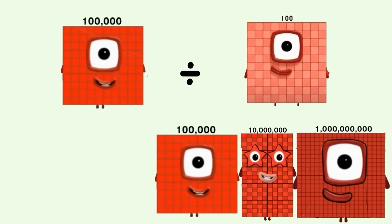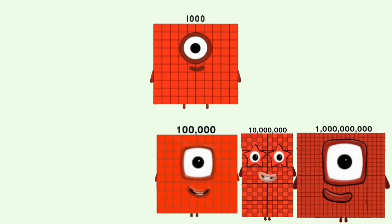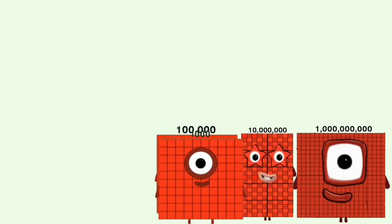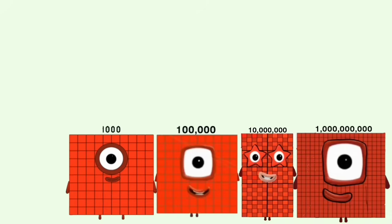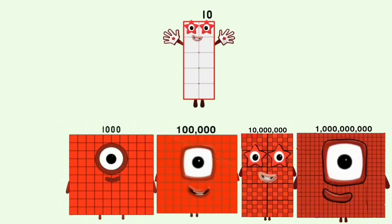100,000 divided by 100 equals 1,000. 1,000 divided by 100 equals 10.